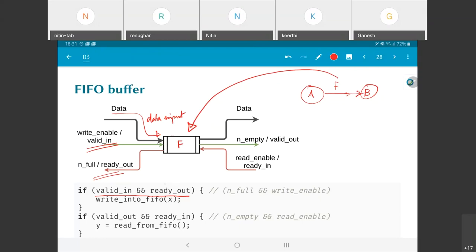And what F is telling A is it gives it the ready_out signal, whereas valid_in comes from A to F. And if both of these conditions are satisfied we can put a value into the FIFO. Similarly on the other side where F is communicating to B, valid_out goes from F to B and ready_in comes from B to F.